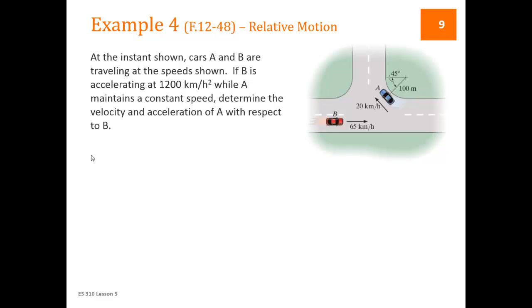So let's write this out. VB is most easily expressed in the I hat, J hat coordinate system. So here is the I hat, J hat coordinate system. So VB only has an I hat part, 65 I hat. The acceleration of B is also given. It's accelerating, must be accelerating in the direction it's going. So it's also only got an I hat part, and it's 1,200.